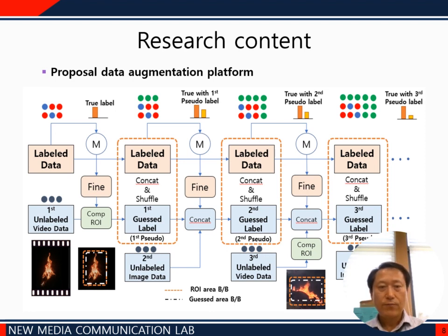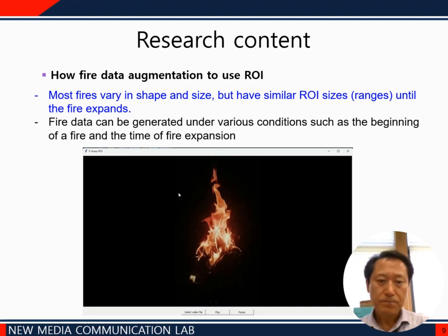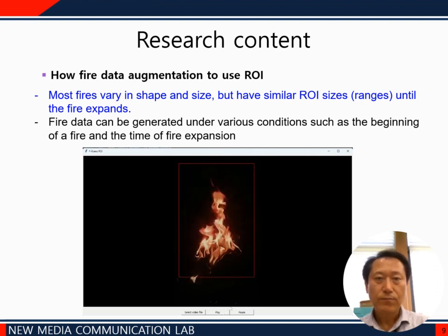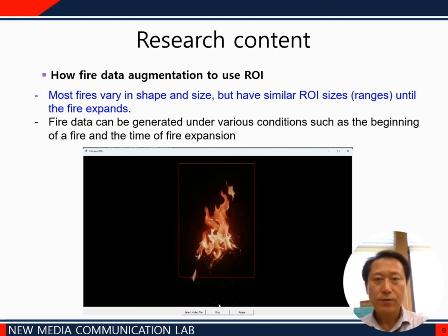Most fires vary in shape and size, but have a similar ROI size until the fire expands. The size of the fire is determined by ROI on the video start screen, and is compared with IOU predicted throughout this range by the running model. IOU is used for pseudo-label data if it is more than 50%. In the attached video file, the shape and size of the fire changed in various ways, but all have a similar ROI until the fire expands. Using this, we could significantly improve misclassification.